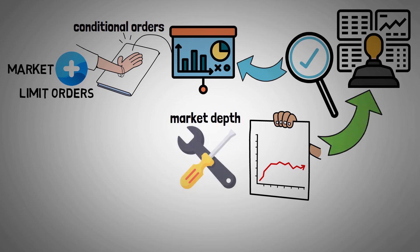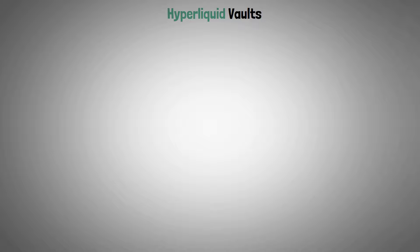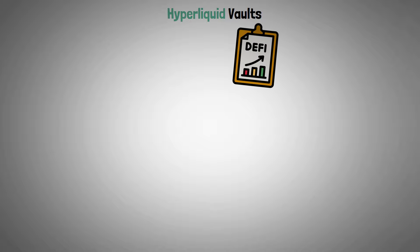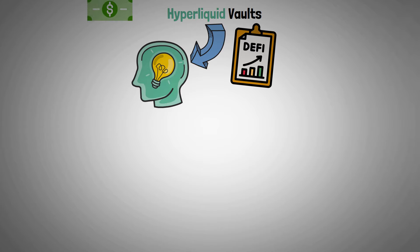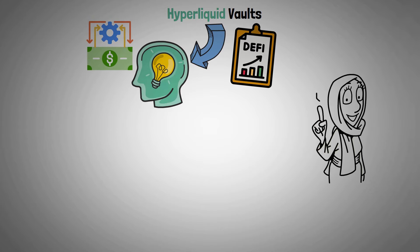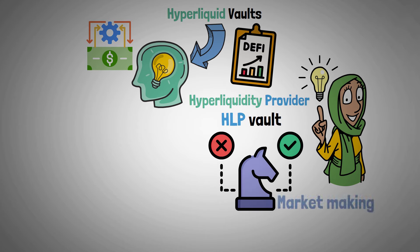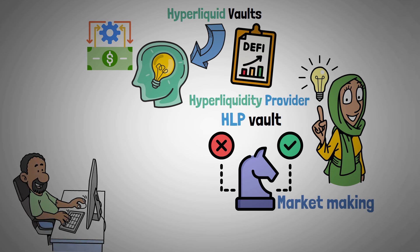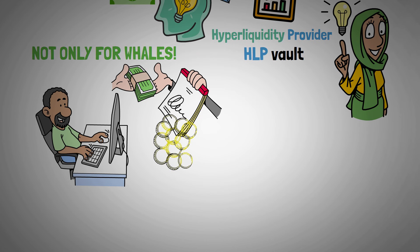Real-time price charts and tools for visualizing market depth give traders the information they need to act swiftly and decisively. In the DeFi space, Hyperliquid Vaults offer a revolutionary method of providing liquidity. One noteworthy feature is the Hyperliquidity Provider, or HLP vault, which democratizes market making by enabling retail users to engage in activities usually exclusive to larger institutions.